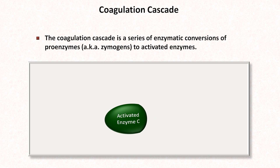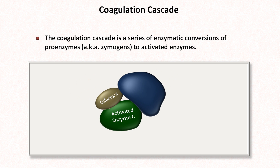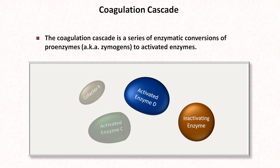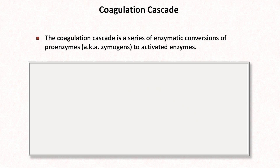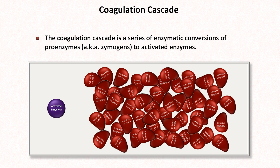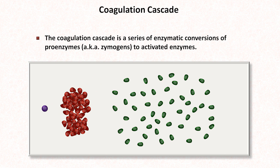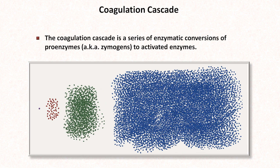And maybe activated protein C then requires a cofactor of some kind in order to activate proenzyme D. Then comes along an inactivating enzyme which binds to enzyme D, preventing its action. Each step along the way gets multiplied — each copy of enzyme A might activate 100 copies of enzyme B, each copy of activated enzyme B might activate 100 copies of enzyme C, and each enzyme C might activate 100 copies of enzyme D. So from one molecule of activated enzyme A, we end up with one million molecules of activated enzyme D. This process is what is known as the cascade.